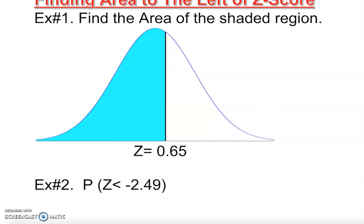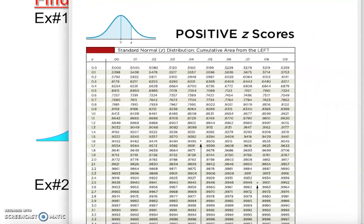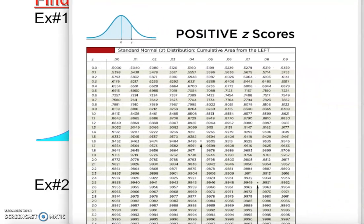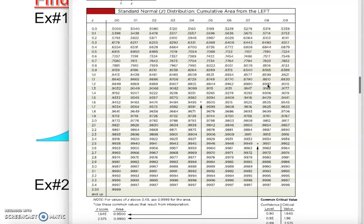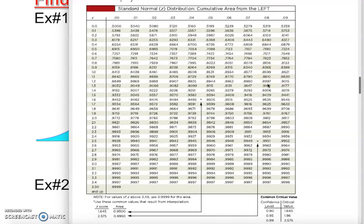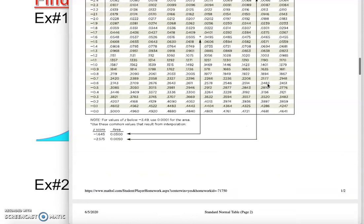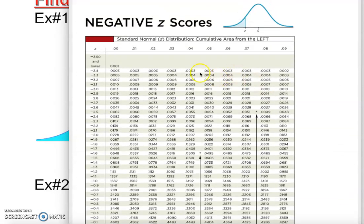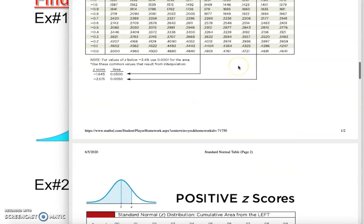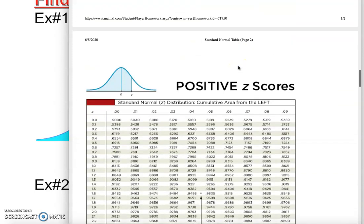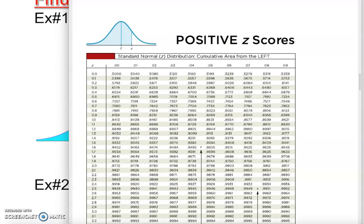What is the z-table? Let me show you. This is a z-table — we have one for positive z-scores, and there is another one, a negative z-table. So we're going to use one or the other based on what is given to us.